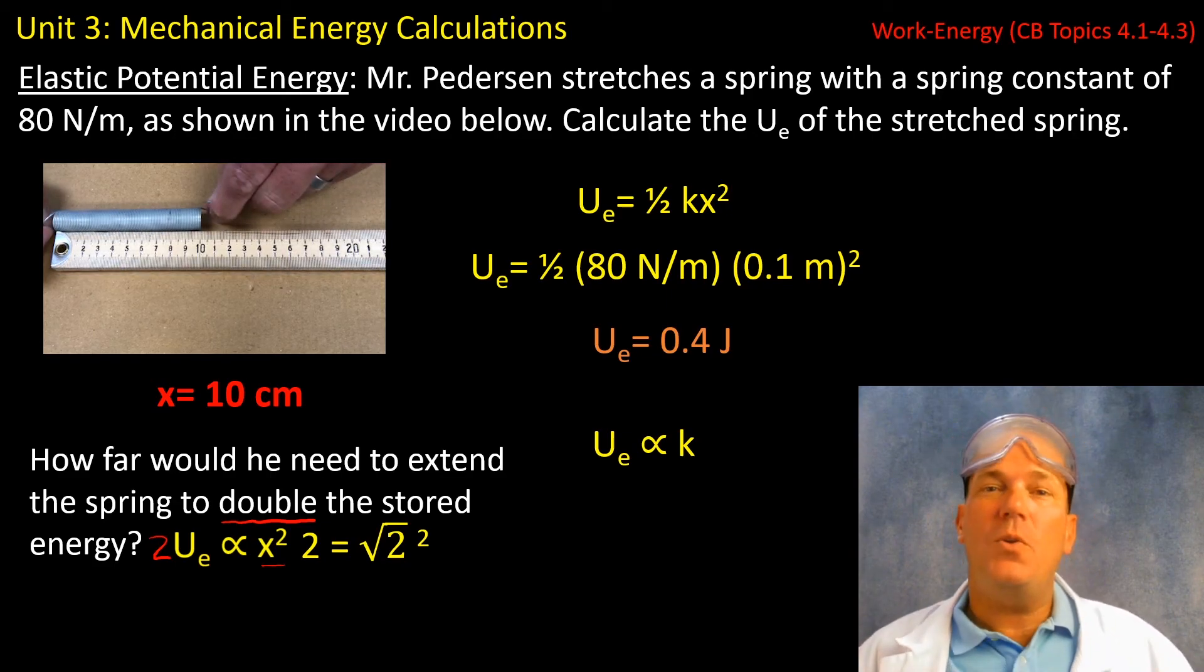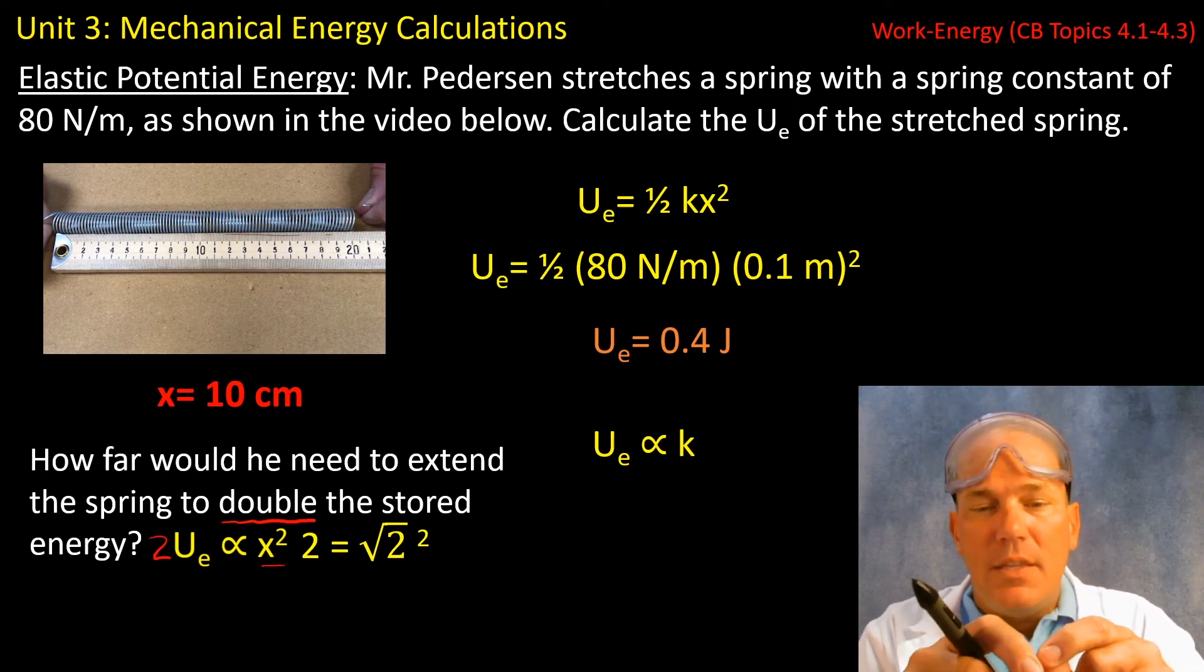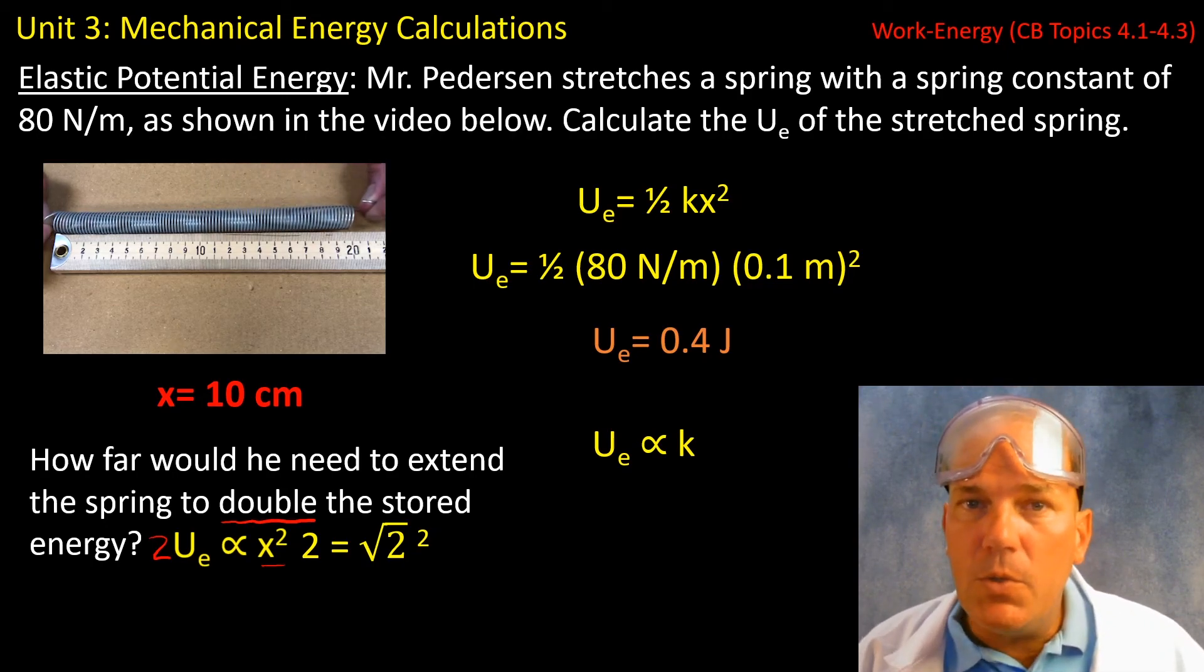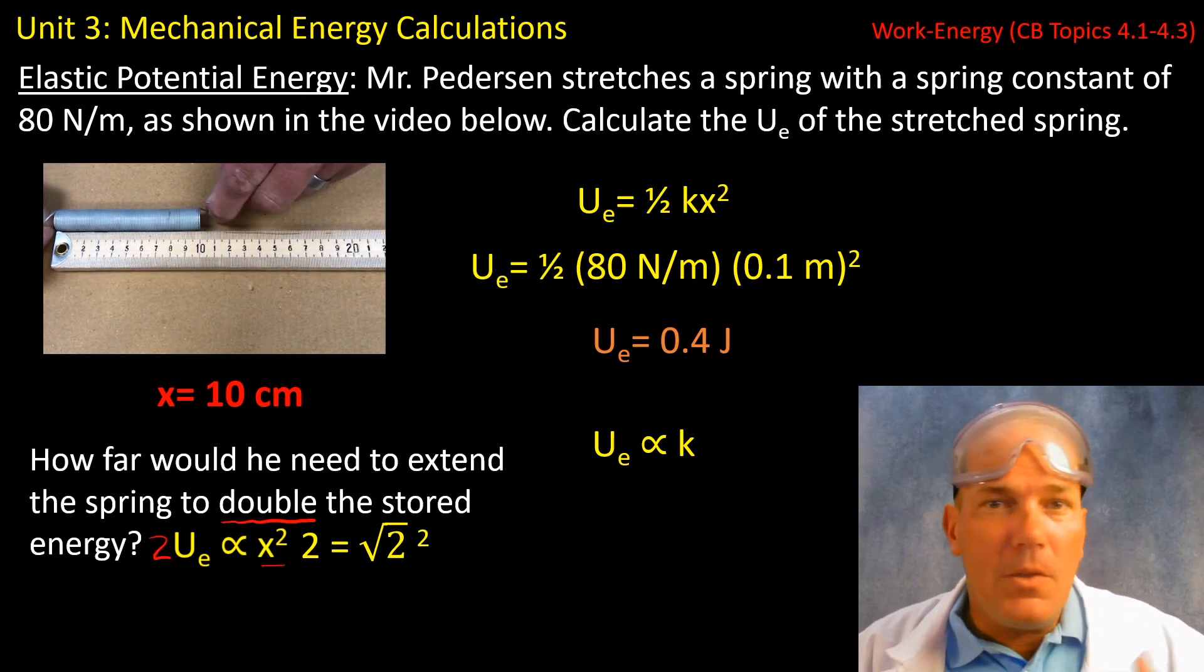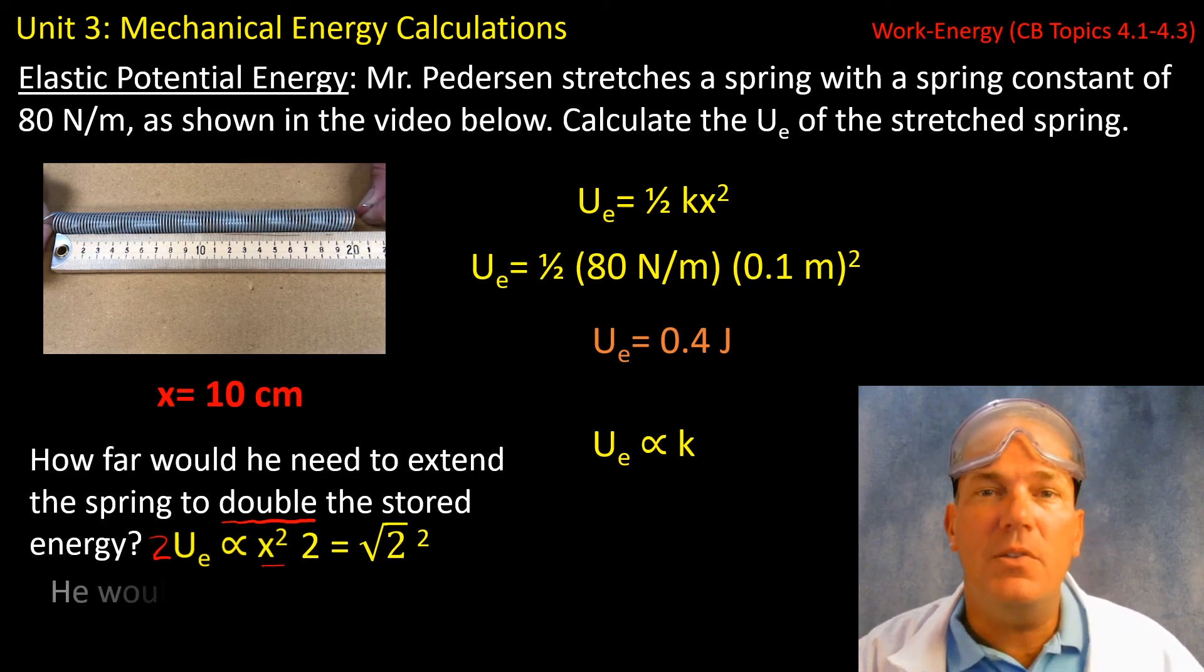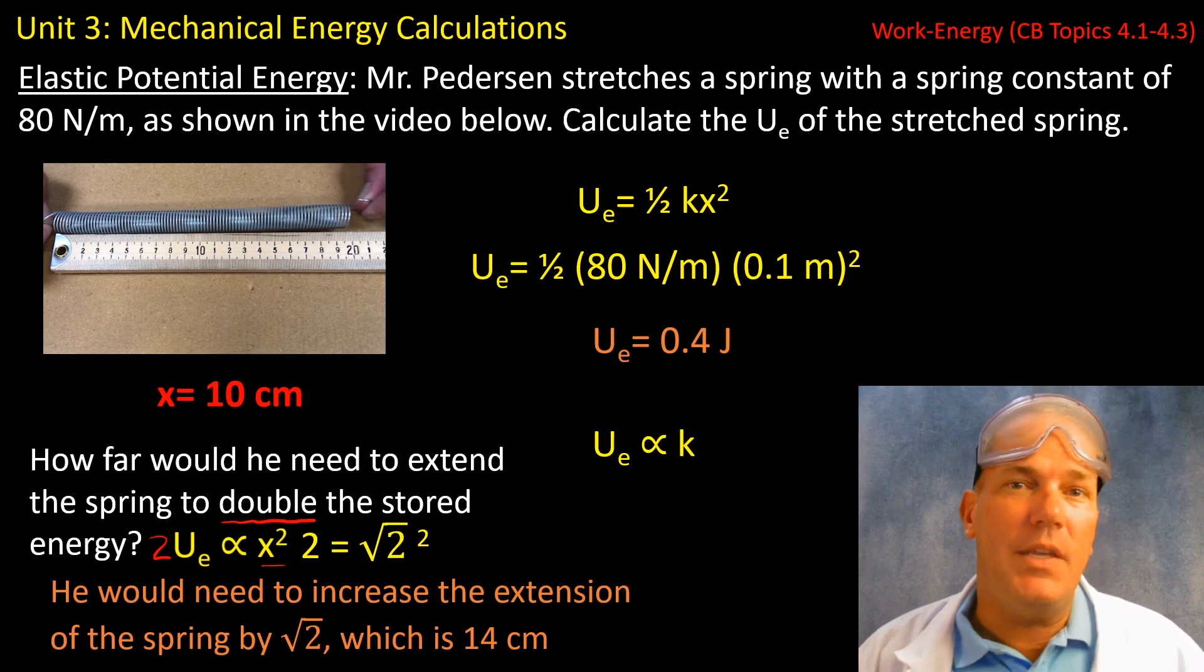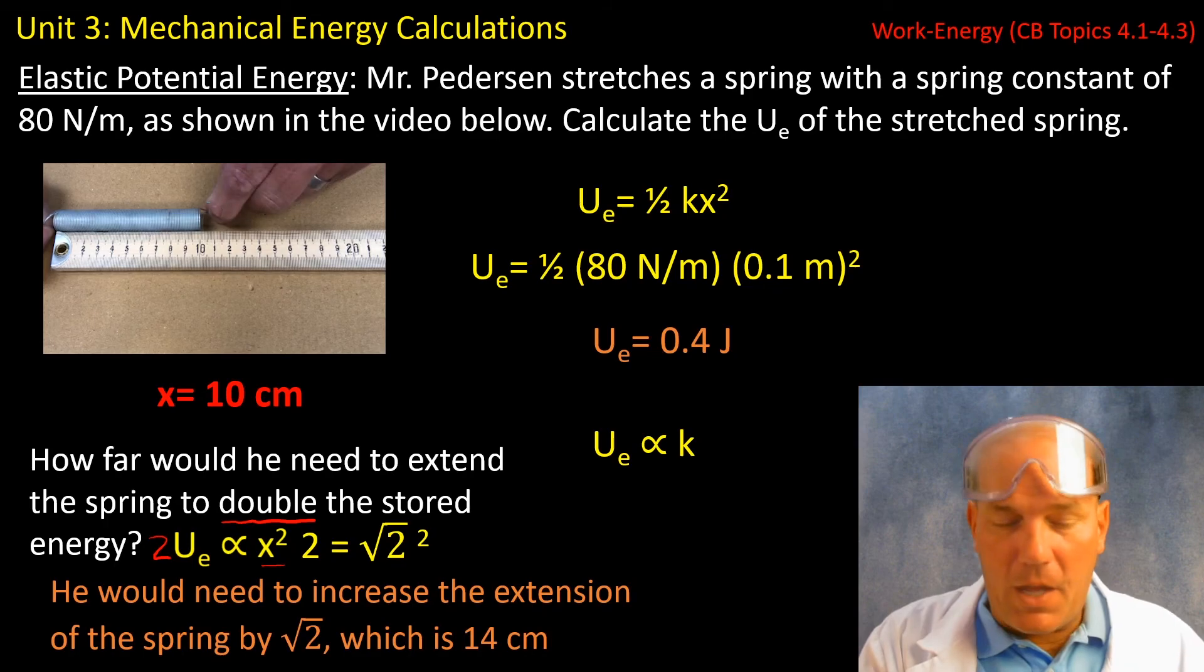All right, so this means that I'm going to need to extend the spring the square root of 2 times further. Well, the square root of 2 is approximately 1.41 and if I multiply 1.414 times 10 centimeters I get the answer. So by increasing it by the square root of 2, I would need to extend the spring 14 centimeters.